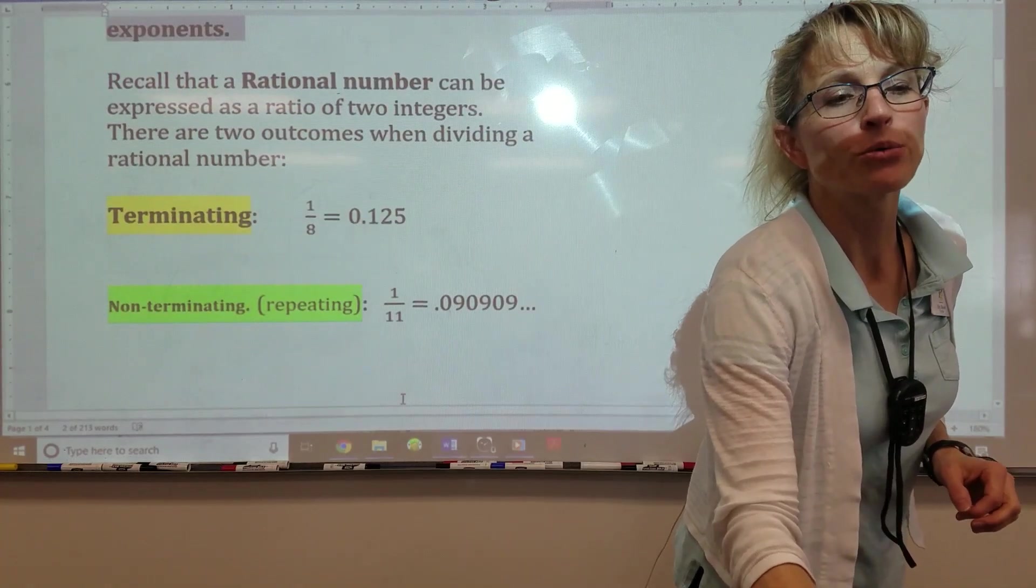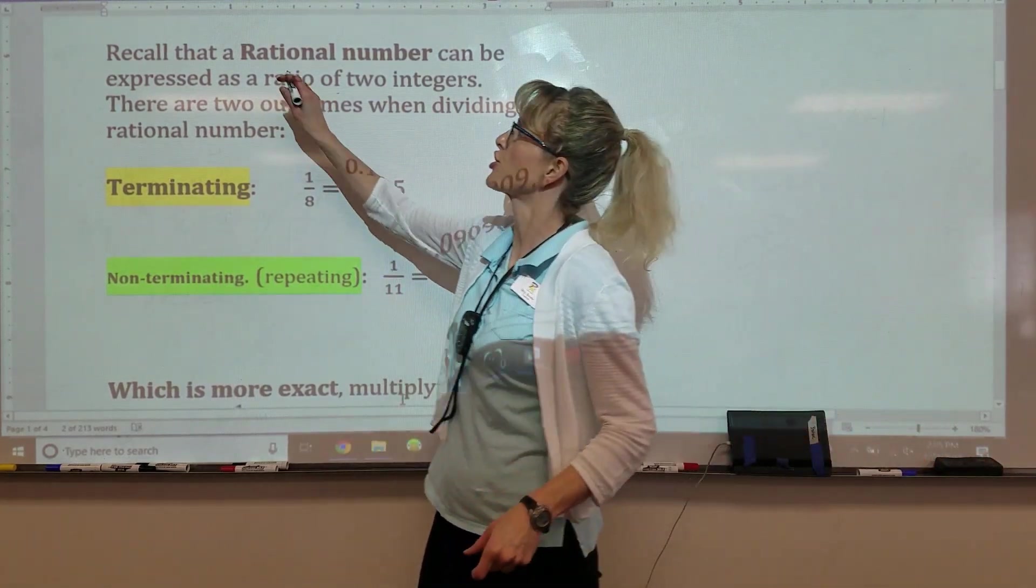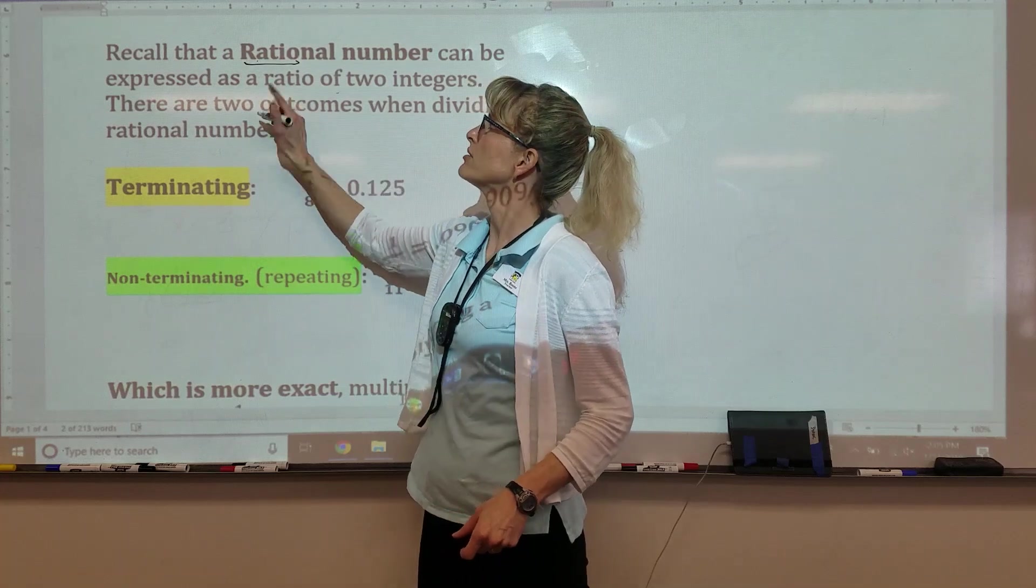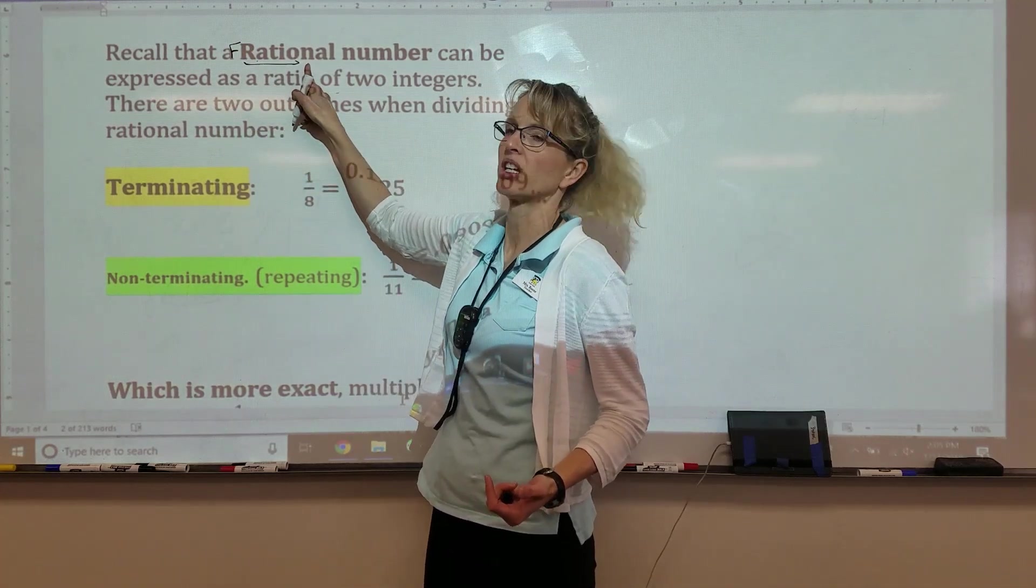So recall, a rational number is a number that can be expressed as a fraction or ratio. Here's your clue: ratio is in the word rational, and also if you put an F in front of it, it says fraction in it.